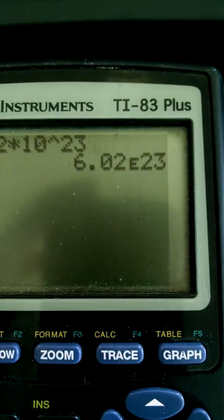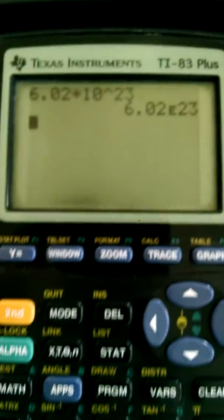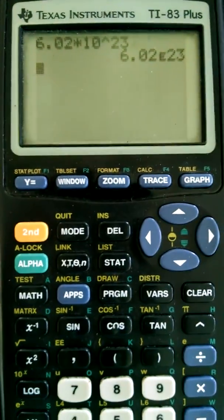And note your answer is 6.02 E23. In answers, don't write E23; E means nothing to me. Times 10 to the 23rd is where it's at.